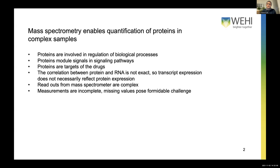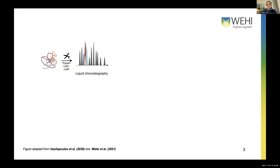That's important because proteins are involved in regulation of biological processes — they modulate signaling pathways, they are targets of drugs, and we know that there isn't necessarily a correlation between protein and RNA. So it's important to measure proteins directly and quantify them. The readouts from a mass spectrometer are unfortunately very complicated, and we can't consistently quantify all proteins across all samples in an experiment, which raises the issue of missing values.